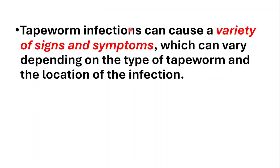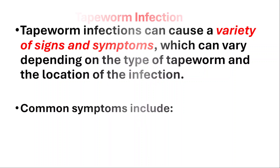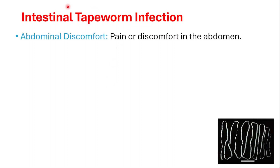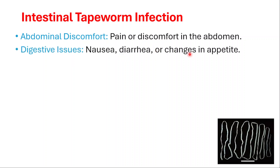The infection of tapeworm can cause a variety of signs and symptoms, which can vary depending on the type and location of the infection. Common symptoms with intestinal infection include abdominal discomfort, pain or discomfort in the abdomen, nausea, diarrhea, or changes in appetite.